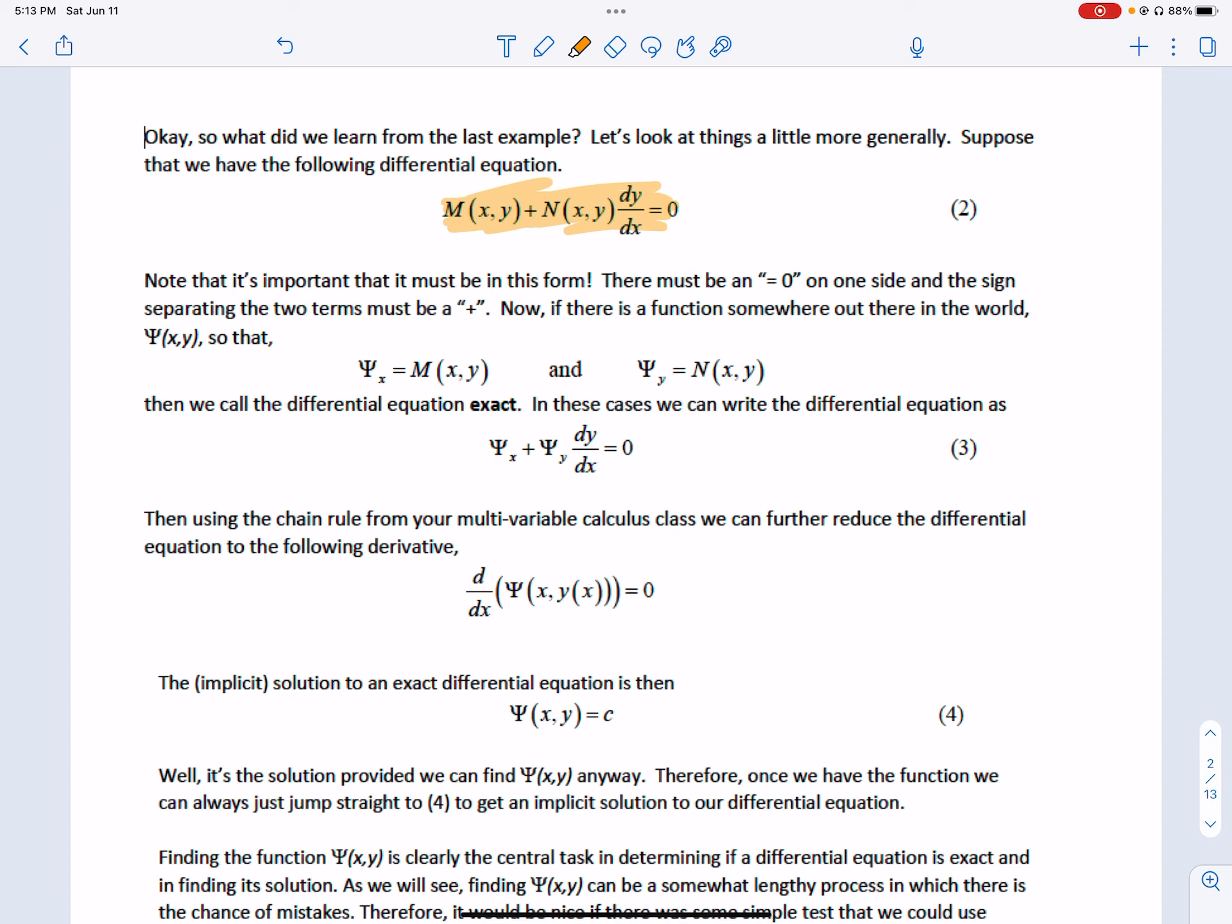So we have this equation in this form. That's where we're starting. And we're going to talk about how to tell if it's exact, but for now, we're going to assume it's going to be exact. Notice there must be an equals 0, a plus sign separating the two terms. So if it's a minus, you need to change it to plus negative.